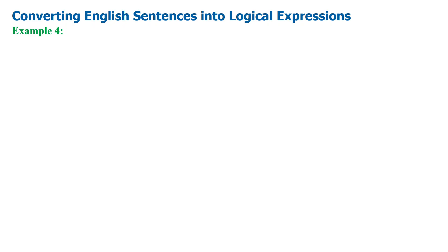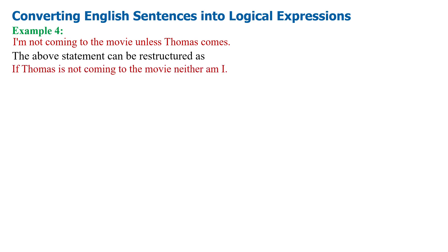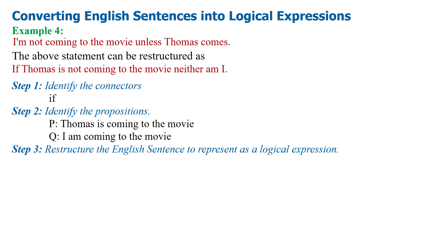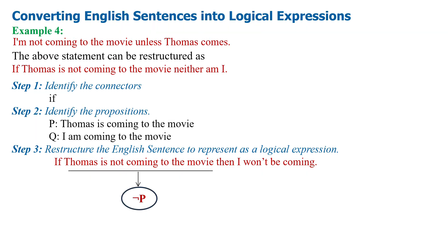Example 4: I am not coming to the movie unless Thomas comes. This can be restructured as: if Thomas is not coming to the movie, neither am I. Step 1 — the word IF is the connector. Step 2 — Proposition P is 'Thomas is coming to the movie'; Proposition Q is 'I am coming to the movie'. Step 3: 'Thomas is not coming to the movie' is represented as negation P; 'I won't be coming' is represented as negation Q.